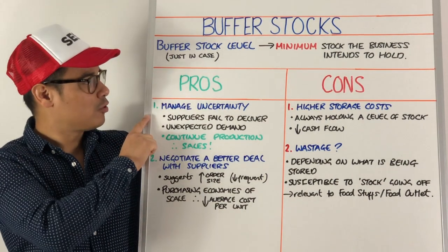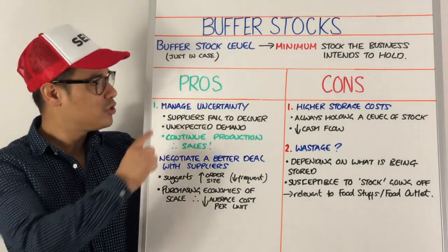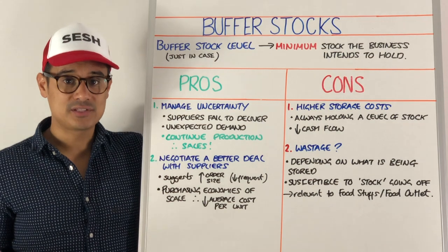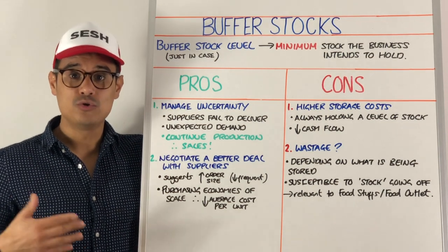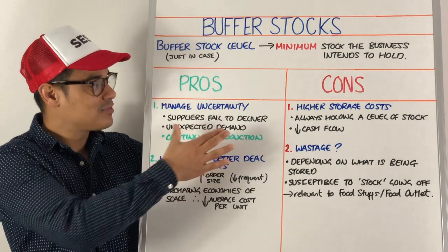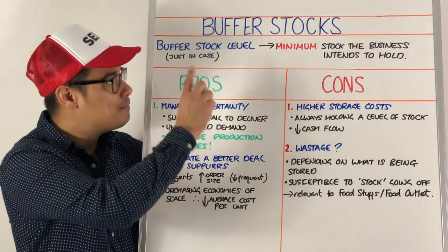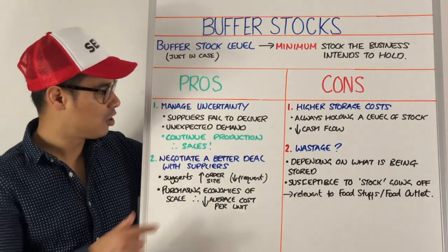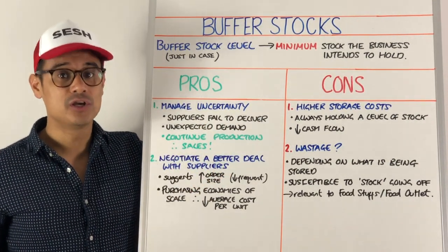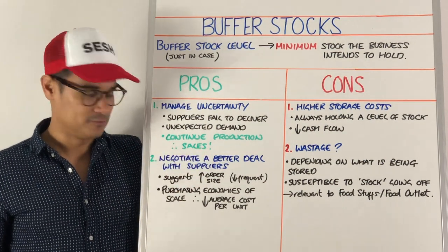The main pro of buffer stocks is that because you're holding a minimum stock, you're going to manage your uncertainty. So if your suppliers fail to deliver your raw materials or components, or there's unexpected demand for your products, if you're always holding a minimum level of stock, you can continue to produce. And if you can continue to produce, you can continue to make sales — that's the most important thing.